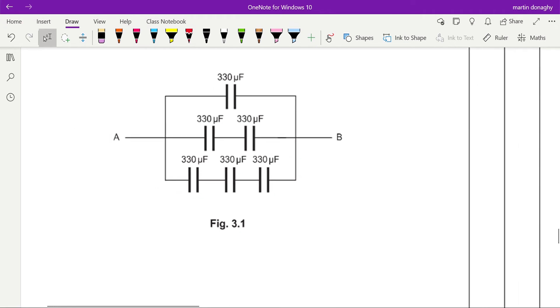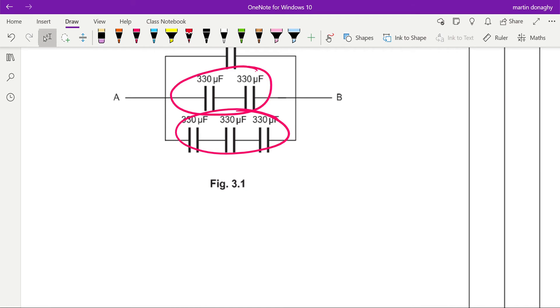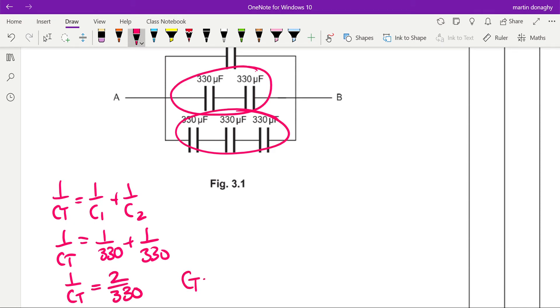What we have to do is evaluate each of these branches first. So along that branch, each of those series branches, we have to do 1 over CT equals 1 over C1 plus 1 over C2, which is equal to 1 over 330 plus 1 over 330. You can see what this does here because 1 over CT equals 2 over 330, so CT will be 330 divided by 2, which is 165.